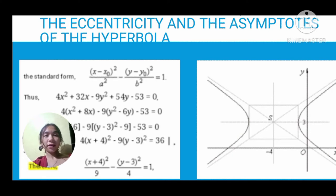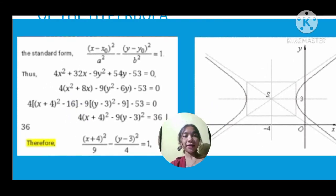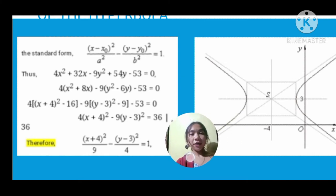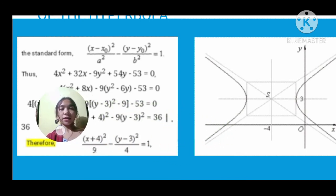This is the solution. Therefore, the final answer is (x + 4)²/9 - (y - 3)²/4 = 1. So it follows that a² = 9 and a = 3, and b² = 4 and b = 2. And the center of the hyperbola...